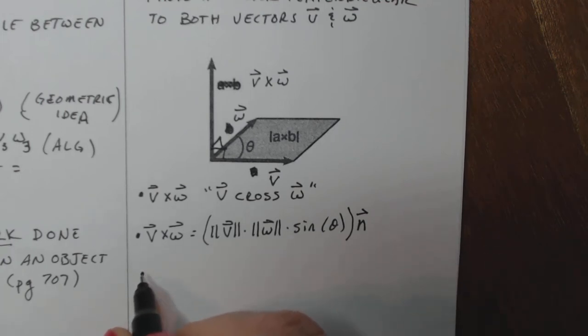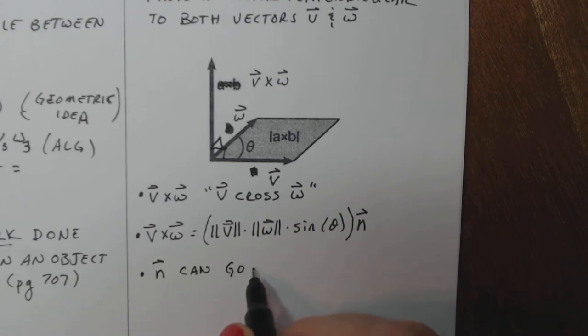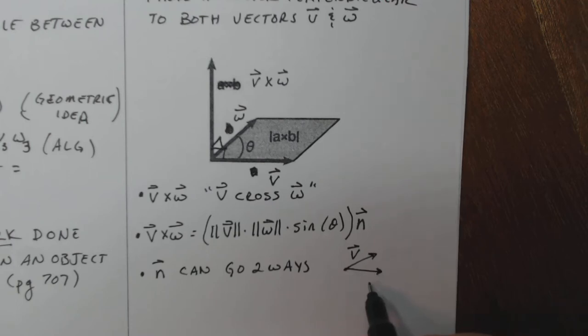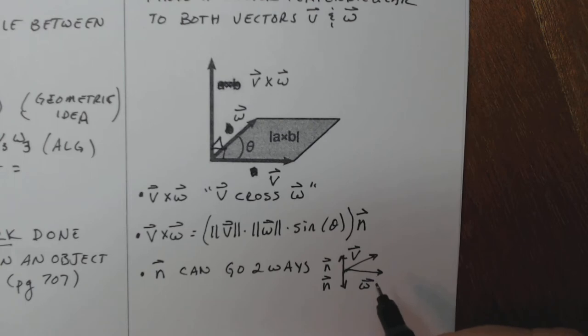Now, the vector N can go two ways. So if I have a vector V and I have vector W, I can have N going this direction or N going down this direction, and we have to kind of determine which way N is going up or down, and it depends.